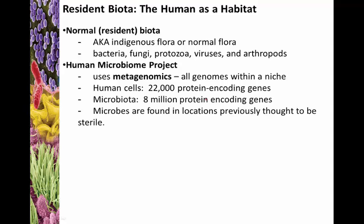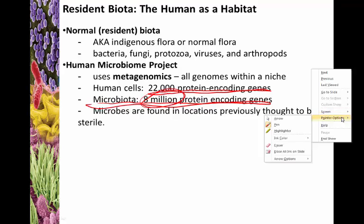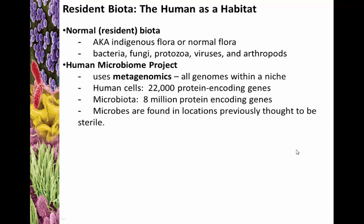Something called the Human Microbiome Project, started about 10 years ago, uses metagenomics to study all of the genomes within an individual niche. It involves about 22,000 protein-encoding genes within human cells, and roughly 8 million protein-encoding genes from our microbiota — the bacteria that live in or on us far outdoing us in total protein count.